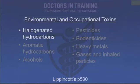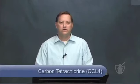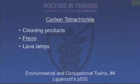Let's jump into some of the agents, starting with more environmental or occupational chemicals. The first is carbon tetrachloride — CCl4 — a halogenated hydrocarbon. Its main use is in the dry cleaning industry, where it's called 'carbon tet.' It is also Freon, used in refrigerants, and is found in lava lamps. The most common routes of exposure are contaminated drinking water or occupational inhalation.